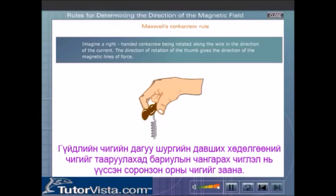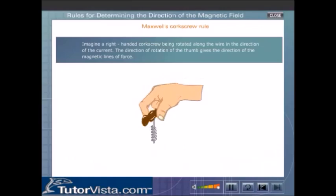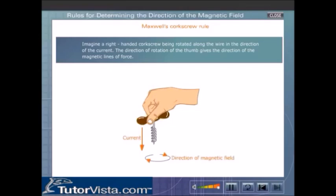Maxwell's Corkscrew Rule. Imagine a right-handed corkscrew being rotated along the wire in the direction of the current. The direction of rotation of the thumb gives the direction of the magnetic lines of force.